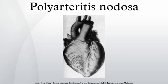Polyarteritis nodosa, also known as panarteritis nodosa, periarteriitis nodosa, or Kussmaul disease or Kussmaul-Maier disease, is a vasculitis of medium and small-sized arteries, which become swollen and damaged from attack by rogue immune cells.